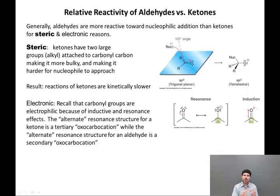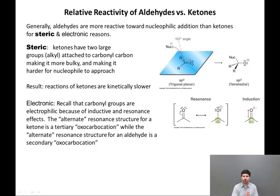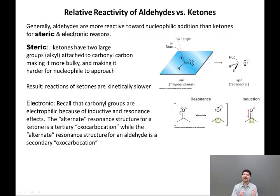If you start with a ketone, this alternative resonance structure is a pseudo-tertiary oxo-carbocation. A true oxo-carbocation has the oxygen neutral and the carbon with a positive charge; here the oxygen is negatively charged and the carbon has a positive charge — thus the term pseudo. With a ketone, this structure is tertiary, which we like, whereas with an aldehyde, this structure is secondary, which we like less.